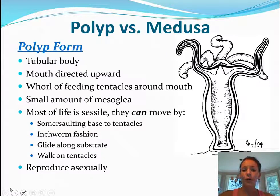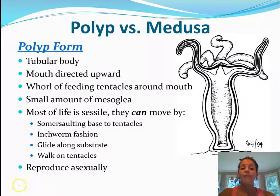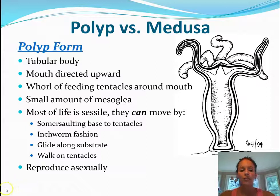There are two forms: the polyp form and the medusa form. The polyp form is sessile — it's attached to something. It has a tubular body with the mouth pointing upward and a whorl of tentacles around the mouth. They have a very small amount of mesoglea. Most of their life is sessile, but they can move by somersaulting, moving in an inchworm fashion, gliding, or even flipping and walking on their tentacles. These mostly reproduce asexually.